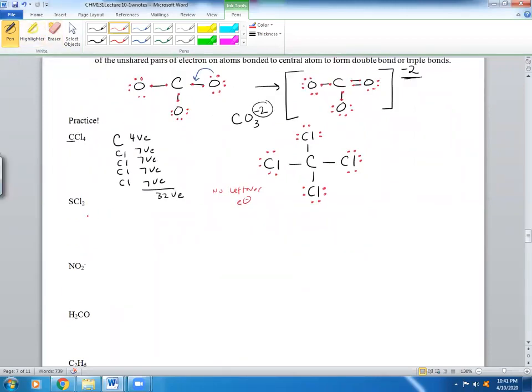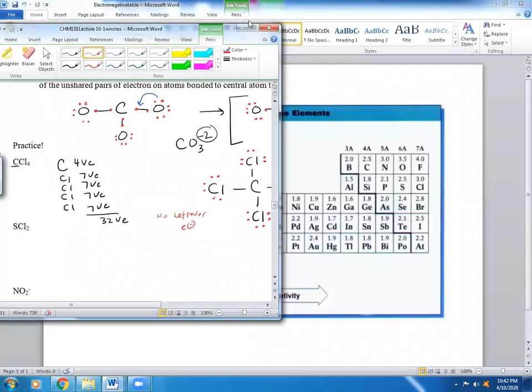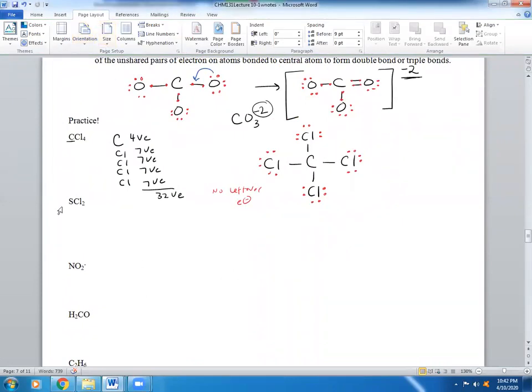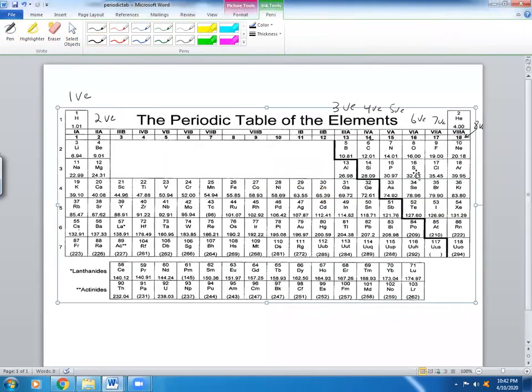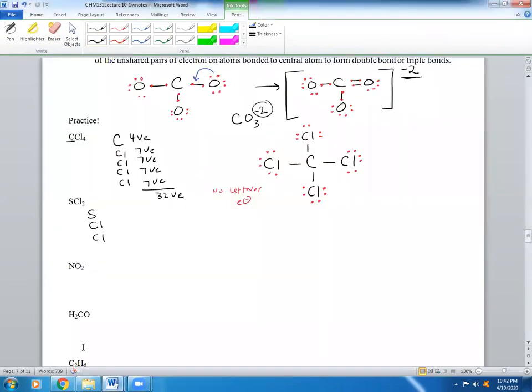SCl2. So you have S and 2 Cls. S has 6, Cl has 7. Any charge I have to worry about? No. So that's 20.